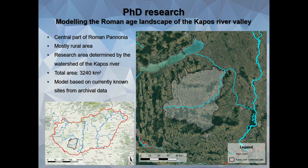This is the theme of my PhD research that is ongoing at the moment. My aim is to create a theoretical model of the Kapos River Valley in Hungary of the Roman settlement structure of this area. I based this model mostly on currently known sites and published and archival data. One of the key issues with this kind of data, however, is that in most cases they only record where sites are located, but it is hard to determine if an area is empty because it was really empty or because it was just not researched yet.